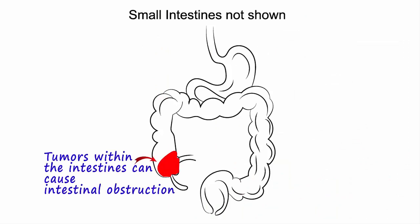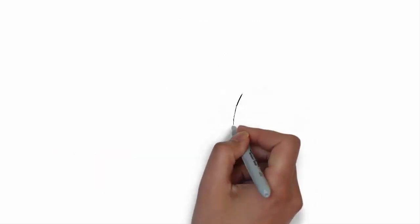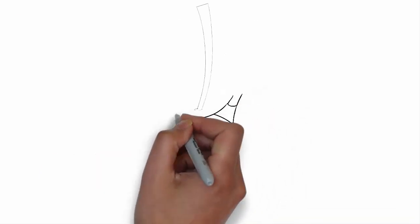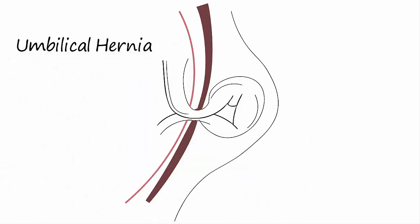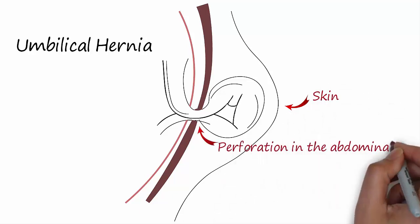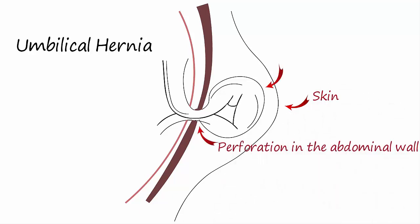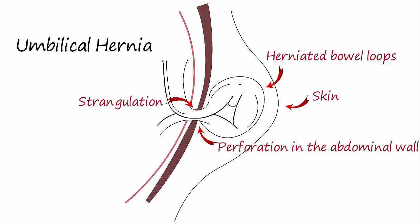A tumor within the intestinal lumen physically obstructs the lumen of the intestines. Hernia is an abnormal protrusion of an organ such as an intestine through an abnormal hole in the wall of the cavity in which it normally resides.